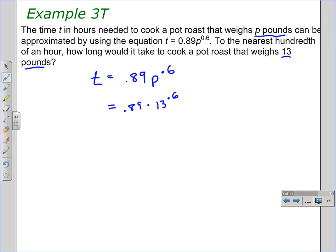You're going to probably want to use your calculator to do this, which would probably be a good idea. And you would just enter 0.89 times 13. If you're using a calculator, you're going to probably look for this key right here. It's a carrot key. And that means to raise to a power. And you'll just enter that. And then the 0.6. Press enter.